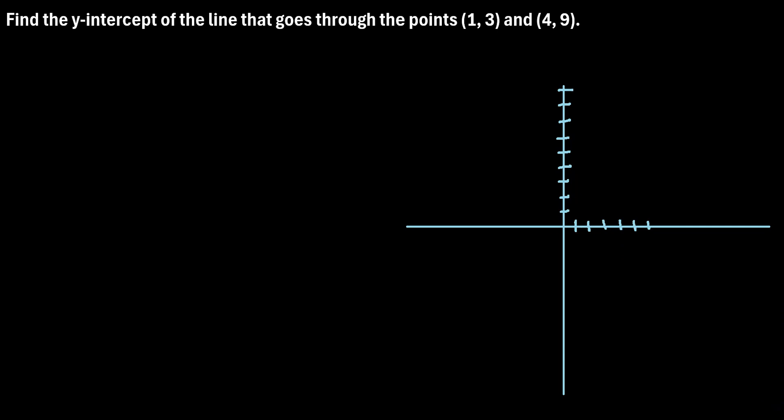So we have two points here: (1, 3), let's say that's right here, and then (4, 9), right about here.